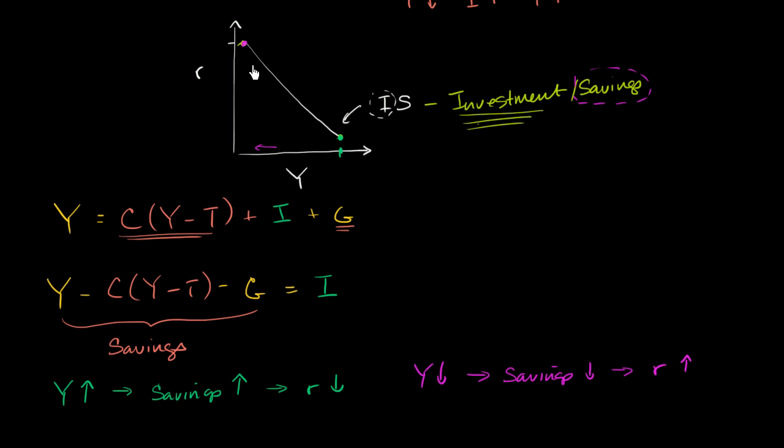So once again, same exact curve, IS curve, but there's two takeaways here. One is to realize why it's called IS, that investment and savings, when you view it from this point of view, really are the same thing. One person's savings can be another person's investment. And when we viewed it from the investment point of view, we were viewing R as driving Y. Now we're looking at it the other way around. Y is driving savings, which is driving R. But it gives us the exact same relationship for this model.